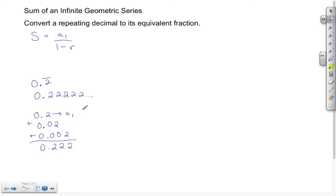This first term is going to be seen as a₁, which can also be written as the fraction 2/10. This second term can be written as a₂, and that will be seen as 2/100. So now we have some of the beginning portions of this formula.